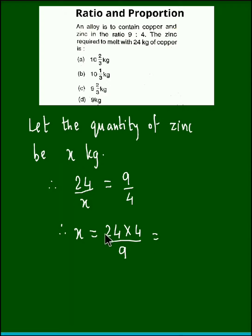If we reduce this, 3 times 8 is 24, 3 times 3 is 9. So we obtain 32 upon 3.